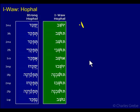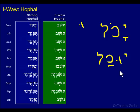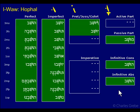Now one other thing I mentioned before: yachal — remember yachal? It means to be able, and it is irregular. In the imperfect it looks like this: yuchal. And yuchal looks just like yushav. So this looks like a hofal — you've got the U there — but it's not a hofal; it's actually a qal. So this is a form that is irregular. It looks like a hofal but it's actually a qal. So again, the thing you want to remember with the hofal is you've got U, and you have it in all the forms.